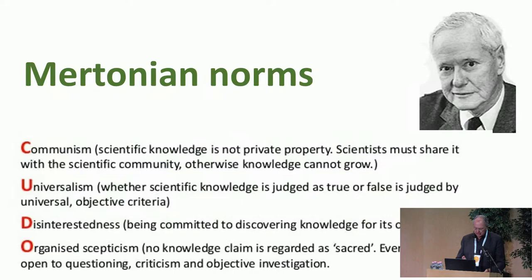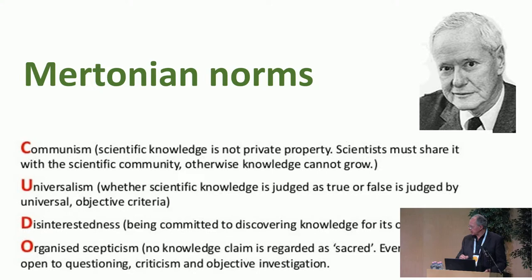These are the Mertonian norms — you probably know them. Published in 1942 and still foundational: all codes of conduct for research integrity are based on them. You can recognize them easily in all the principles and norms. I especially like the last one, the norm of organized skepticism, which is close to what open science — and especially open methods and open data — is all about.